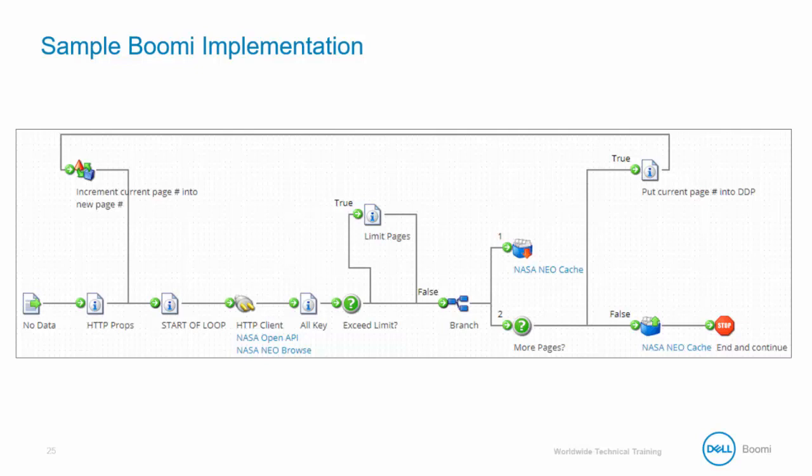Here is a sample Boomi implementation. The process design starts with setting up properties before calling the API the first time. The decision shape checks to see the page limits. The return data is then stored in a document cache, and the second path of the branch checks for more pages. If there are more pages to be returned, the process goes to the true path and passes the current page number into a dynamic process property, which flows back into a data process to increment the page number, then loops back into the HTTP client connector to call the service for the next page.